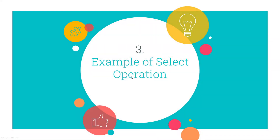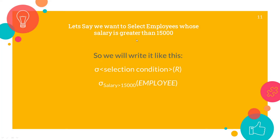Now let's look at an example to understand this better. Let's say we want to select the employees whose salary is greater than 15,000. What is the condition? Salary greater than 15,000. From where do we want to select? From the table employees. So how do we write it? Sigma — the select operator — then the selection condition, and the relation R. So: sigma, selection condition salary greater than 15,000, from the table employee.